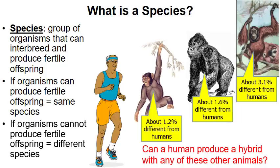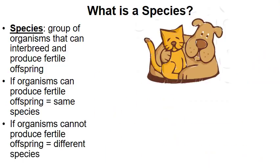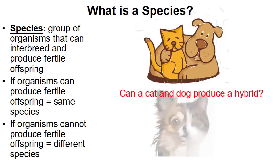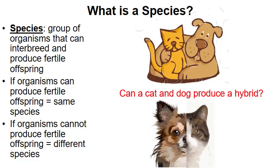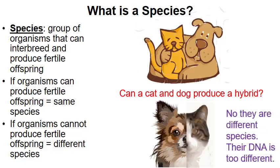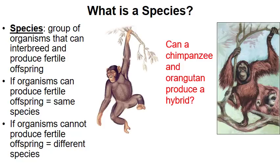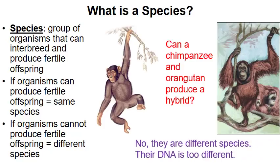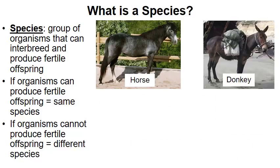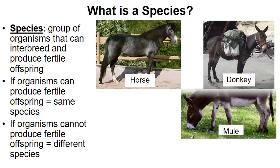Can a cat and a dog produce a hybrid? No — they're different species, and a better reason is that the DNA of a cat is just too different from that of a dog. What about a chimpanzee and an orangutan? Again, no — the DNA of a chimpanzee is just too different from the DNA of an orangutan. Now here's an interesting example: a horse and a donkey can actually produce a hybrid called a mule.